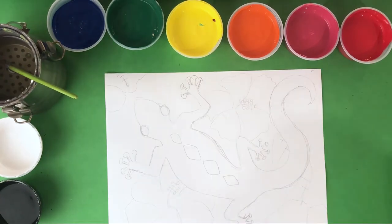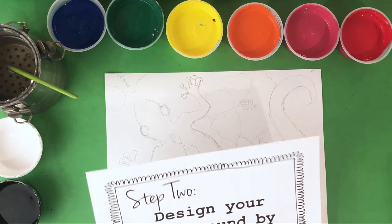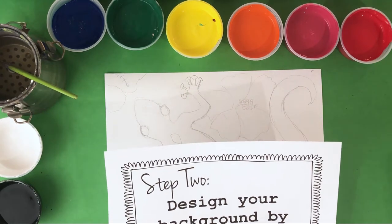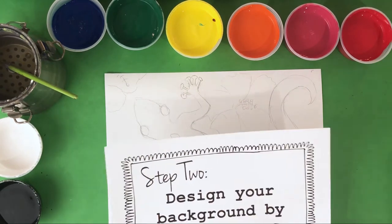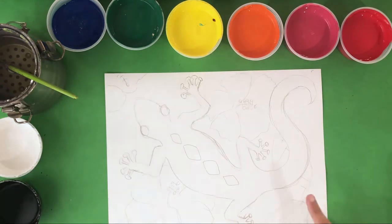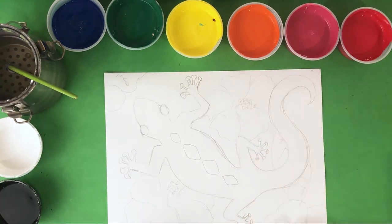I went ahead and completed step two while I was drawing, which is to design your background by drawing trees, leaves, flowers, etc. You can see that I chose to do some hibiscus flowers in the background.